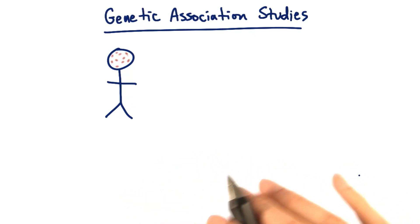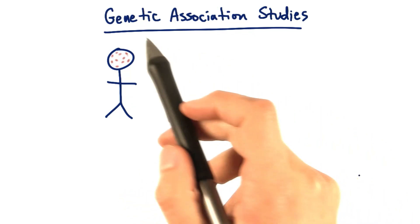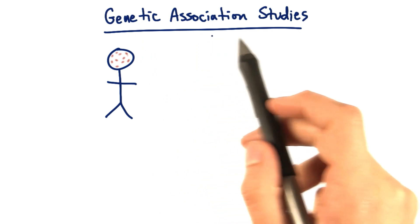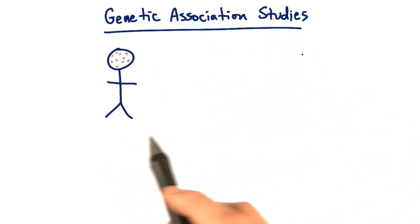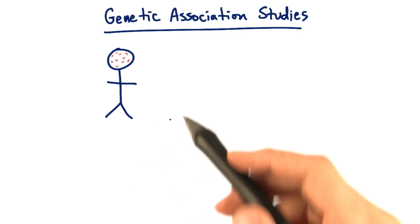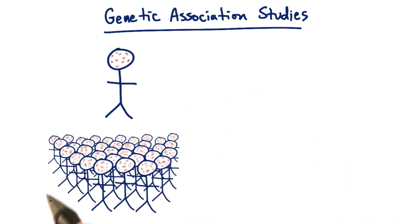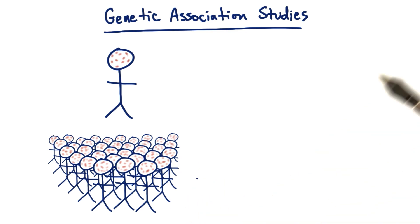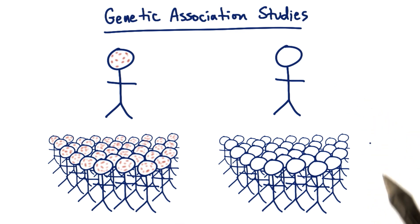To identify genetic factors that may be involved in a particular trait, we conduct something called a genetic association study. These studies take a whole population of people with a trait — for example, a skin condition — and compare their genetics to a group of individuals without this particular trait, in this case, without the skin condition.